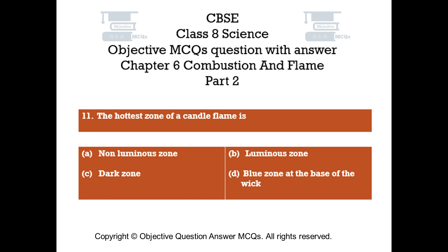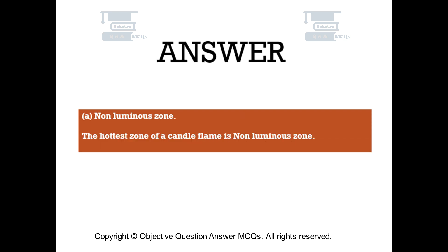Question number 11. The hottest zone of a candle flame is: Option A, non-luminous zone. Option B, luminous zone. Option C, dark zone. Option D, blue zone at the base of the wick. The right answer is Option A. The hottest zone of a candle flame is the non-luminous zone.